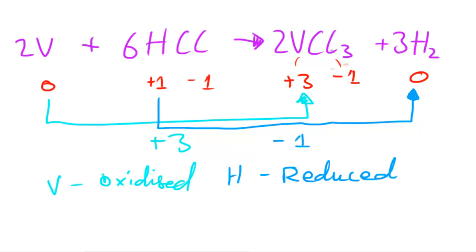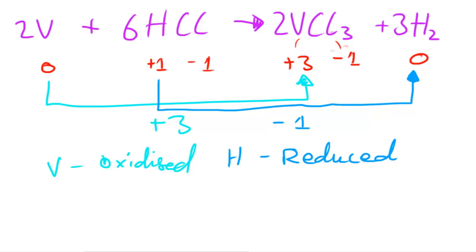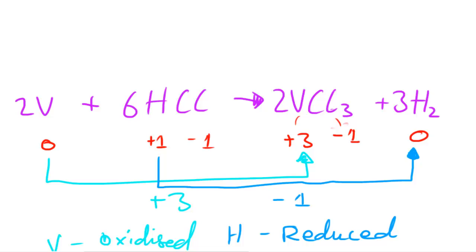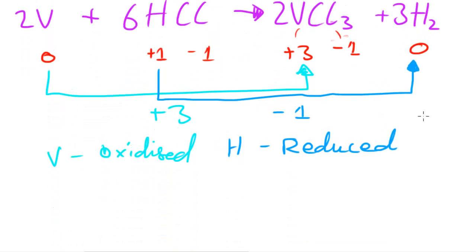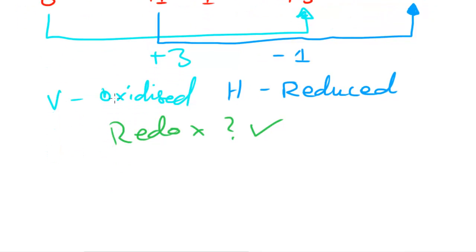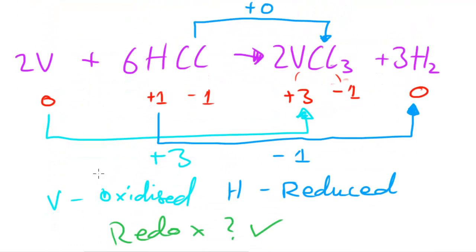Looking at chlorine, the oxidation number has gone from minus one to remaining at minus one — it hasn't changed at all, so chlorine has been unaffected in this reaction. We can say that this is a redox reaction — yes — because vanadium has been oxidized (its oxidation number increased by three) and hydrogen has been reduced (its oxidation number decreased by one).